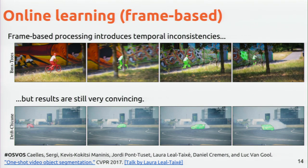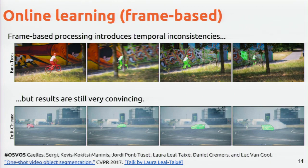If you have a mask, you fine-tune your network to that mask and run it for the rest of the sequence. If you do it frame by frame, you will have temporal problems. Here you can see the results when the network is trained for 10 seconds versus one minute — the mask quality improves with longer fine-tuning.